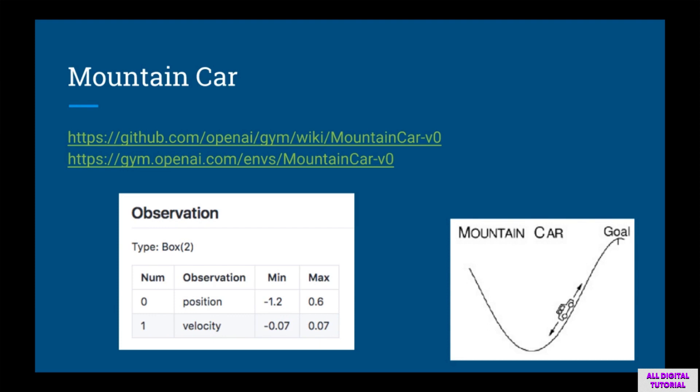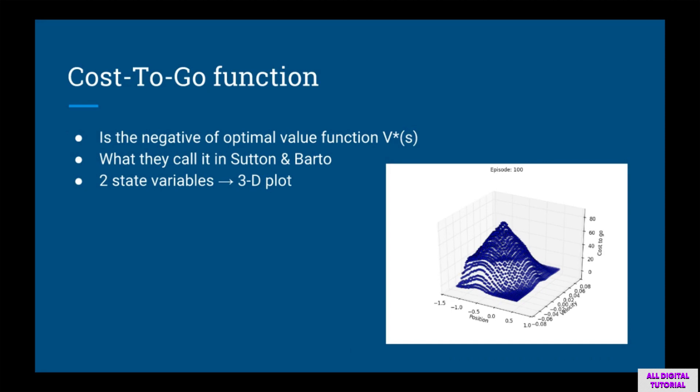We are going to look at the mountain car environment next. Mountain car works like a swing — you're in a car trying to get to the top of a mountain, but your car can't generate enough force to go straight up. You need to swing back and forth to gain enough momentum. Mountain car states have only two variables: position and velocity. The velocity cannot be unrealistically large, making this problem a little easier. We'll also be plotting the cost-to-go function, which is the negative of the value function, as a 3D plot.